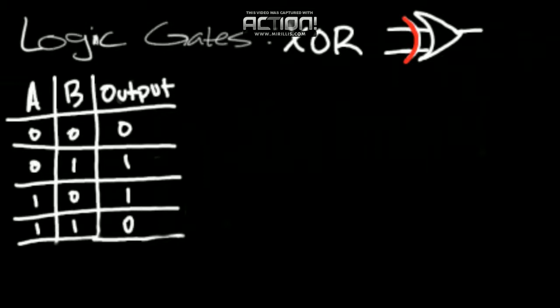Third case, A is true, B is false, the output is true. Again, like a traditional OR gate.